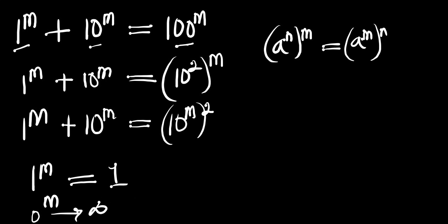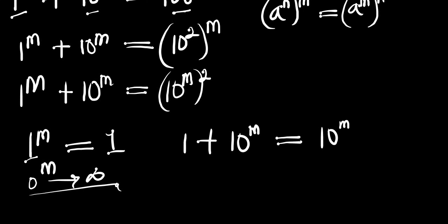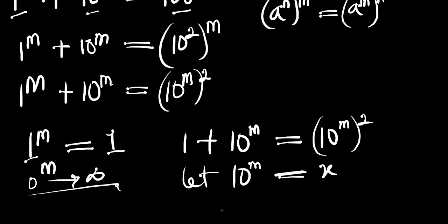As long as the value of m ranges from 0 to infinity, we have 1 power m equal to 1. So in that case we can write 1 plus 10 power m equals 10 power m all power 2. Let x equal 10 power m, so we have 1 plus x equals x squared.